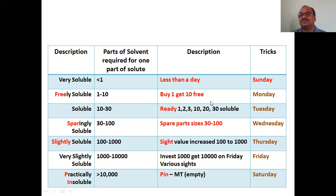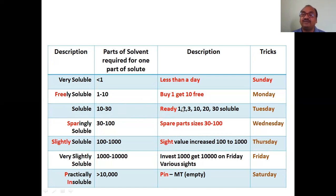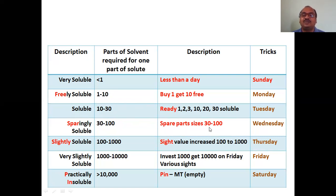For 'soluble,' think of counting: one, two, three — in the same fashion, ready: 10, 20, 30 — so soluble is 10 to 30 parts. For 'sparingly soluble,' think of spare parts — spare parts sizes are available from 30 to 100.